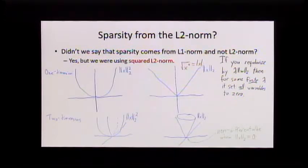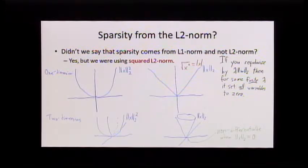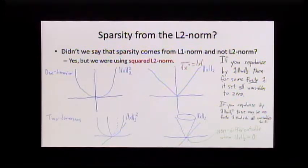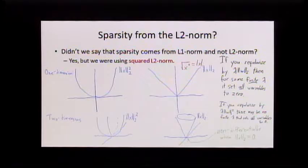If you regularize by lambda times just the norm — not squared — then for some finite lambda, it's actually going to set all values to zero. If you didn't square the 2-norm and make lambda big enough, your solution becomes zero at some point. Whereas if you regularize by the 2-norm squared, there may be no finite lambda where everything gets set to zero. The 2-norm squared does not encourage sparsity in any way.